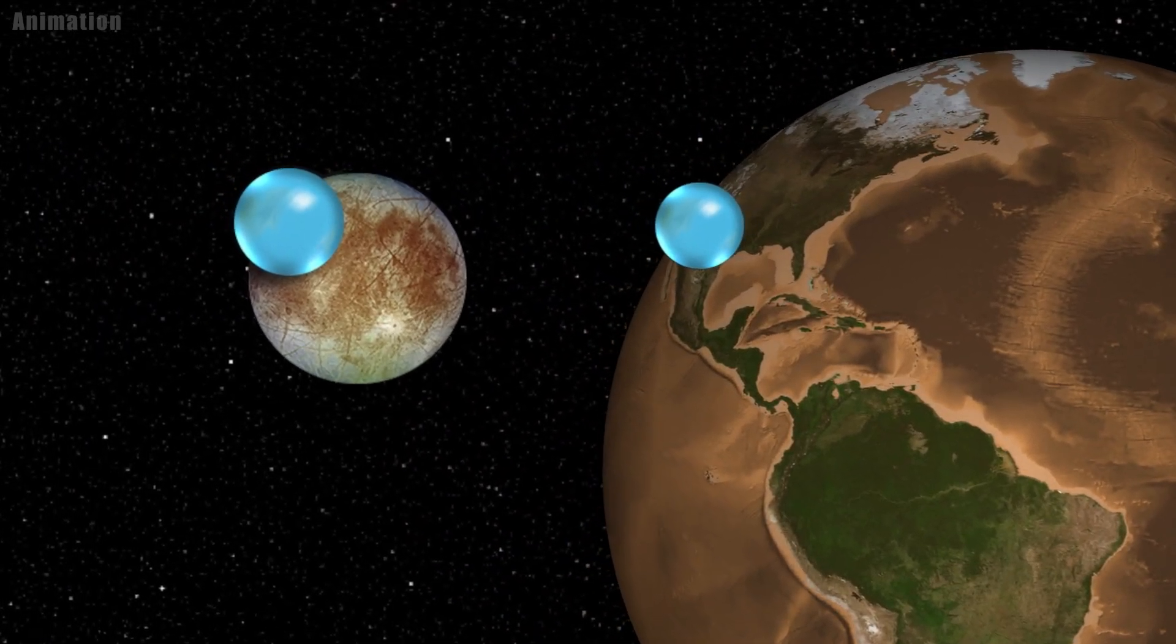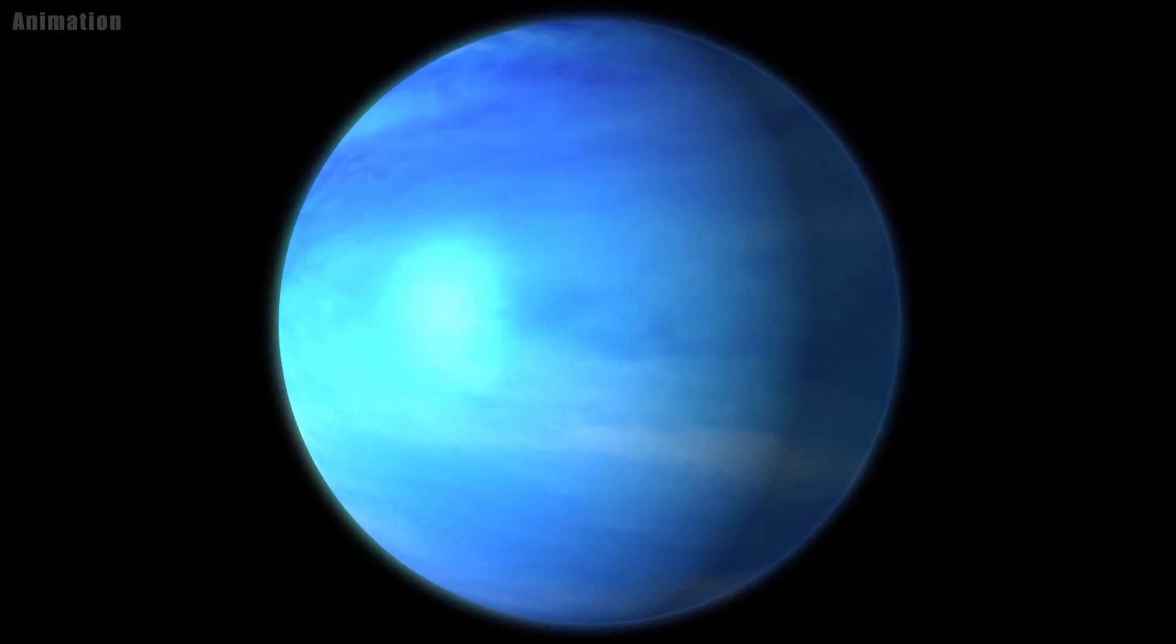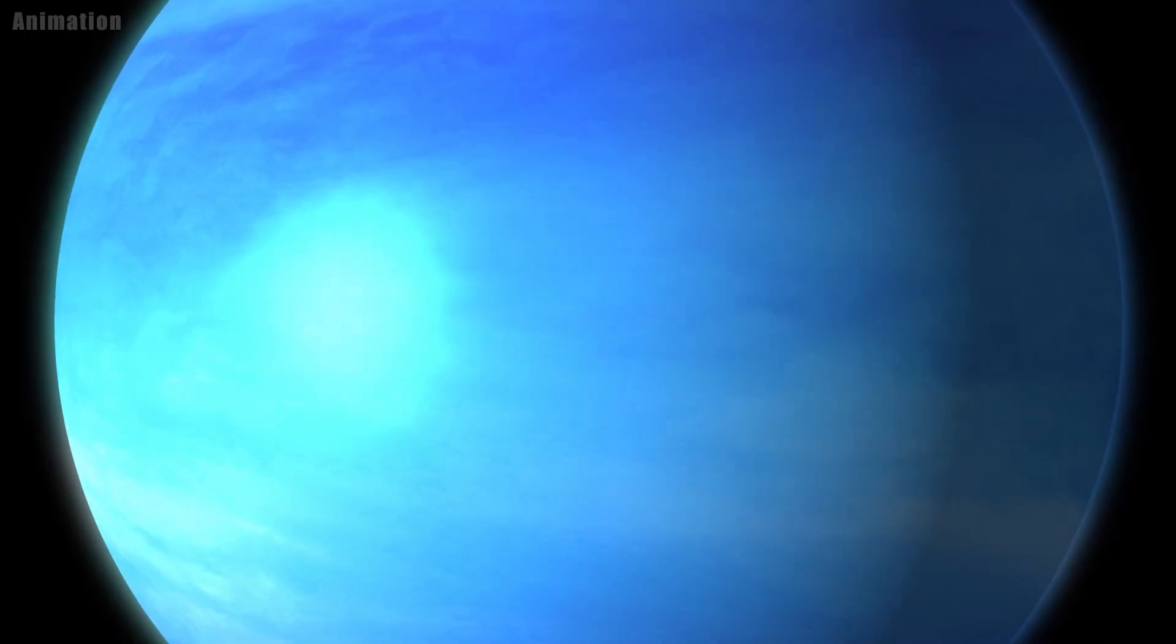The most common of these materials is water. It is the best evidence astronomers have ever found for water worlds, a type of planet long theorized.